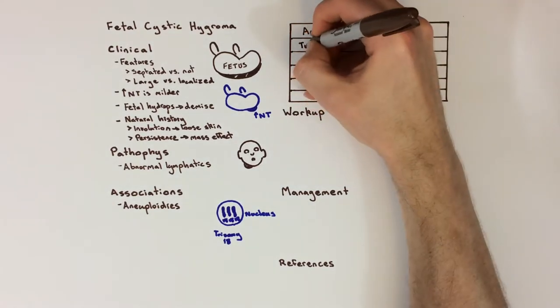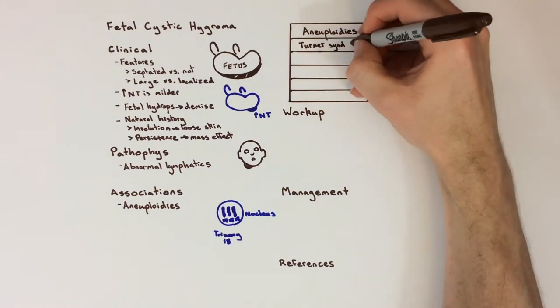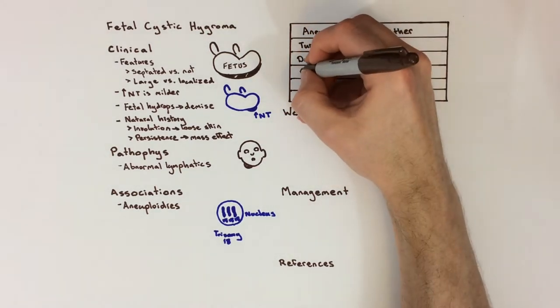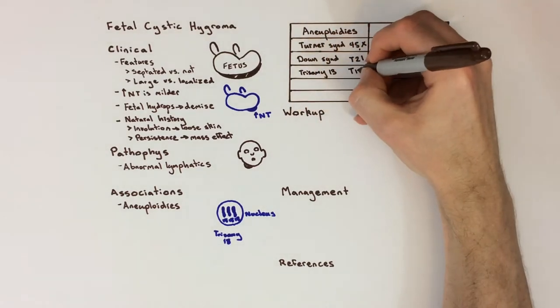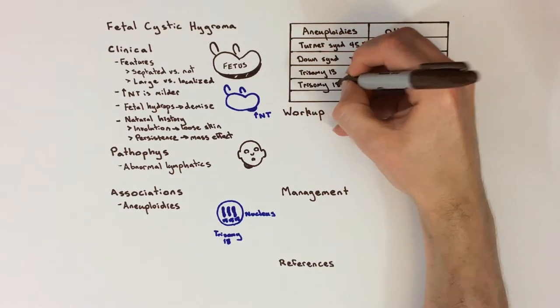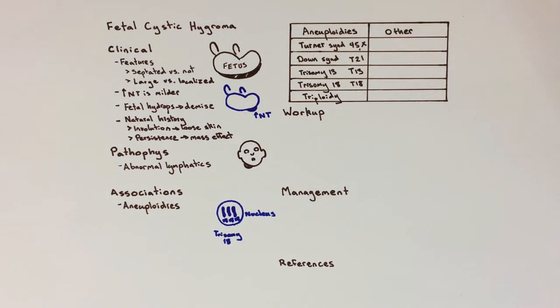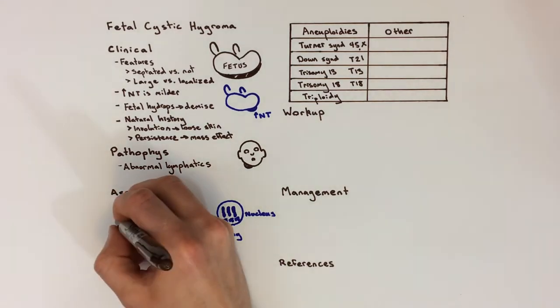Turner syndrome, a single X chromosome instead of XX or XY, and Down syndrome, which is three chromosome 21s instead of two, also called trisomy 21, are the most commonly implicated aneuploidies. Others, such as trisomy 13, trisomy 18, and triploidy, which is three copies of each chromosome, may also be responsible.